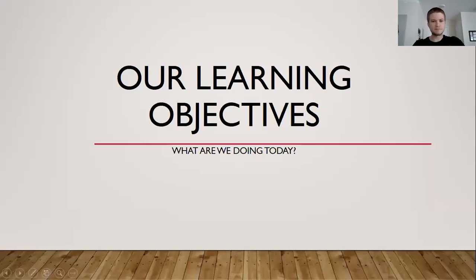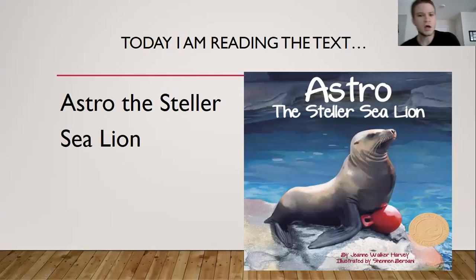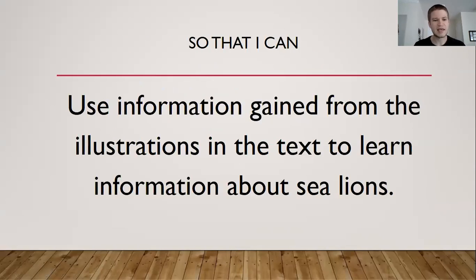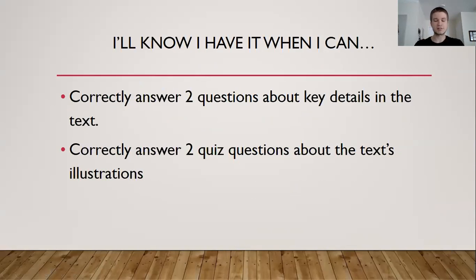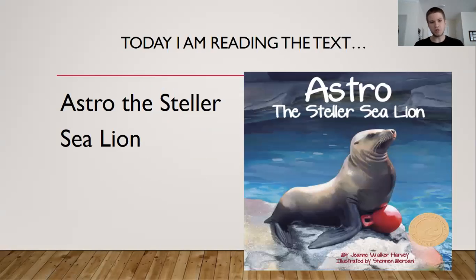Let's pull up our objectives and see what we're doing. So today we are reading the text Astro the Stellar Sea Lion so that I can use information gained from the illustrations in the text to learn information about sea lions. I'll know I have it when I can correctly answer two questions about the key details in the text and correctly answer two quiz questions about the text illustrations. Does that look familiar? Well it should because the objective is still very much the same. We're just going to continue reading more into this text to learn more about seals, but let's break it down a little bit.